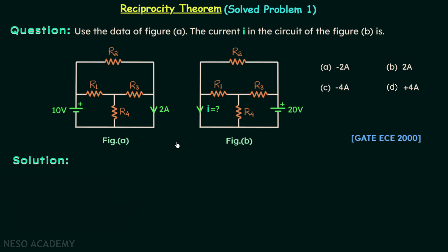The only difference is in this particular network the source is present in this branch, and in this network the source is present in this branch. In this network, current in this branch is 2 amperes.